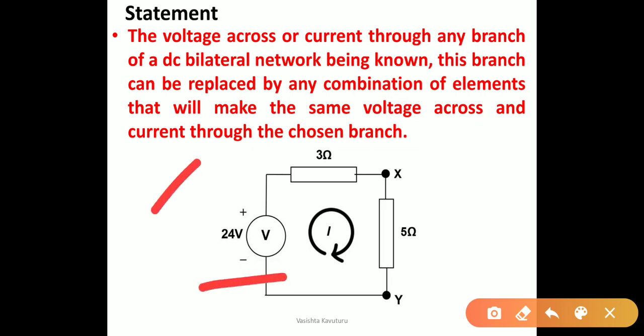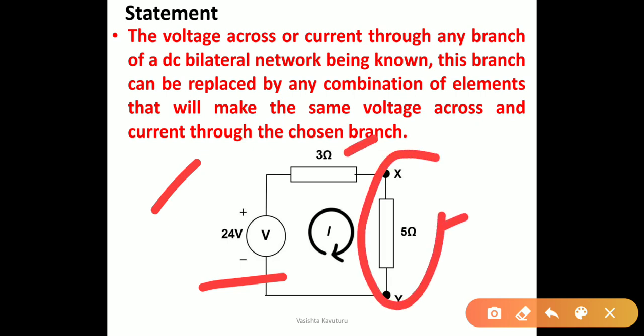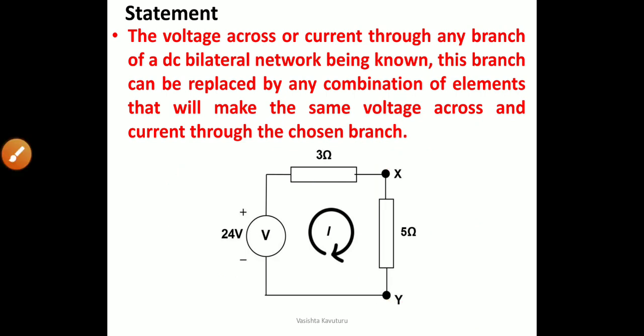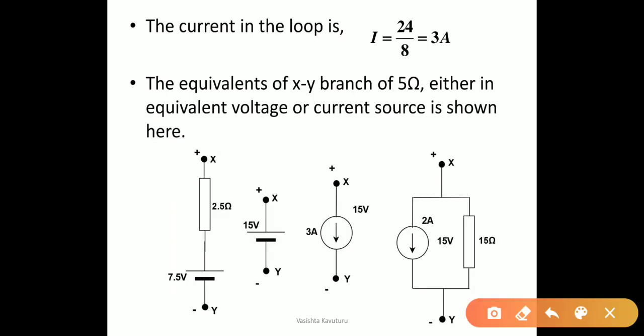We will see this statement by an example. Here a simple circuit is given with a 24-volt voltage source, a 3-ohm branch, and a 5-ohm branch connected at the terminals X and Y. If you calculate the current in the network, that is 24 divided by 8, therefore the current value is 3 amperes.